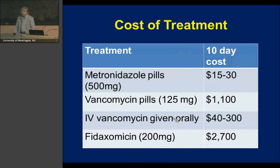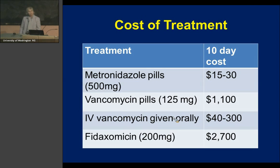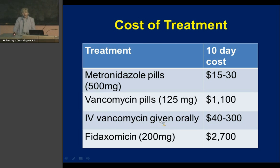Cost comparison: metronidazole orally is very inexpensive at about $15 to $30. Vancomycin pills are about $1,000, although vancomycin has recently come off patent. Many institutions compound the IV form of vancomycin for oral use at a cost of about $40 to $300 — much cheaper than the pills. Fidaxomicin is charged at almost $3,000. Because of this cost differential, there is a strong suggestion to start with metronidazole.